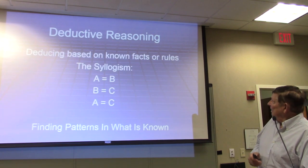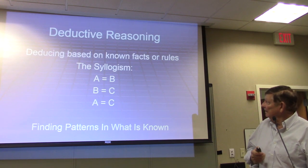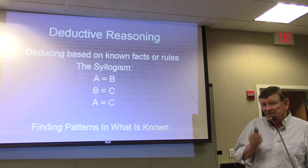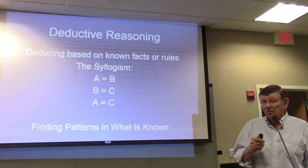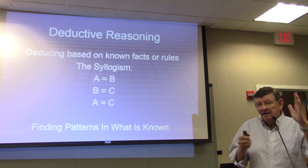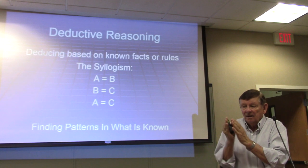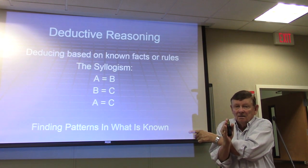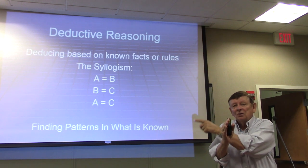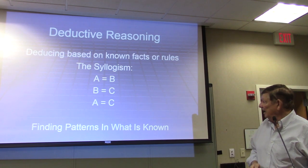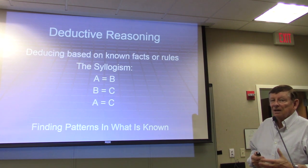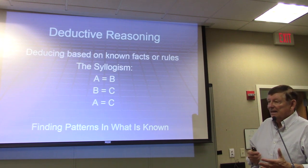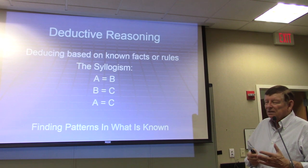Deductive reasoning is based on known facts. This is called the syllogism, and it works like this: A equals B. B equals C. Therefore, A equals C. It's finding patterns that you know — not based on observation, but based on fact. It is a logical approach. But you have to accept the premise.